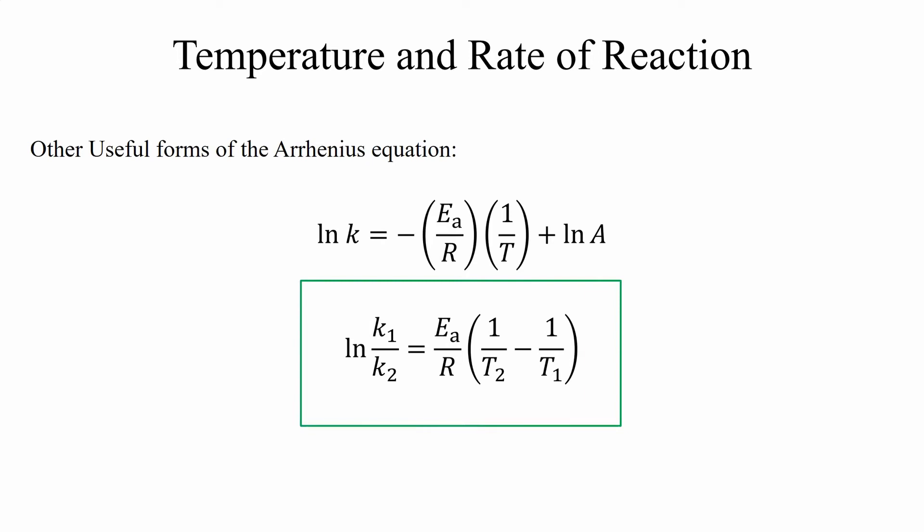This form of the Arrhenius equation relates the rate constant at some temperature T as compared to the rate constant at another temperature.